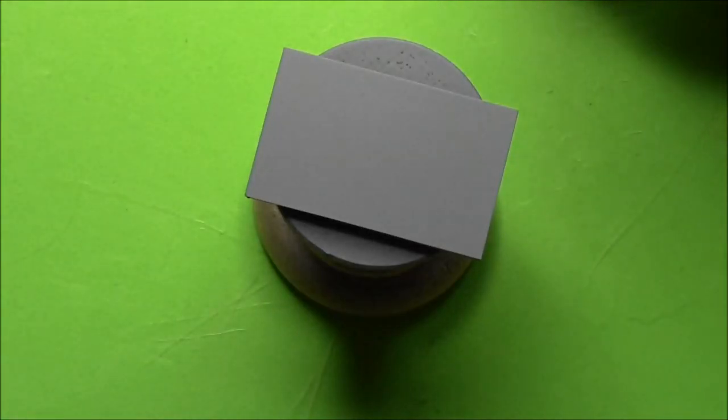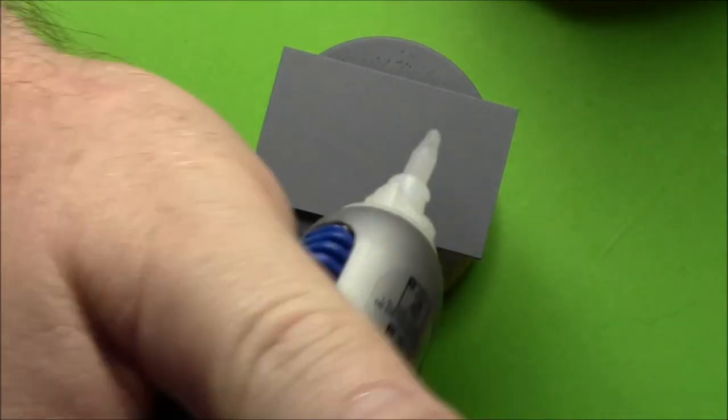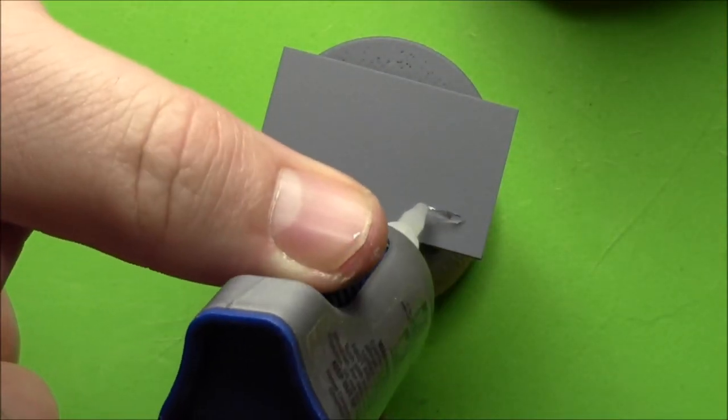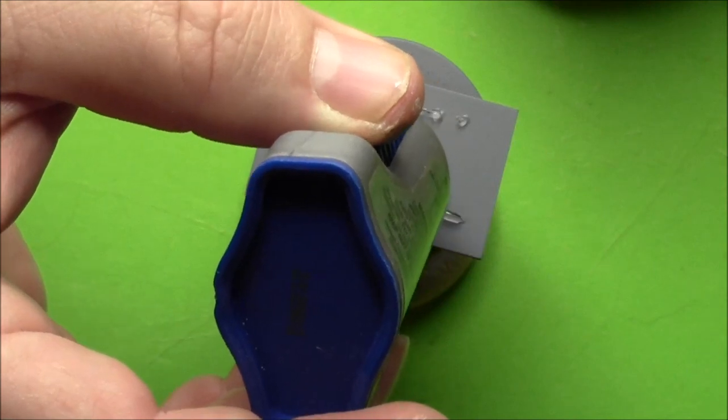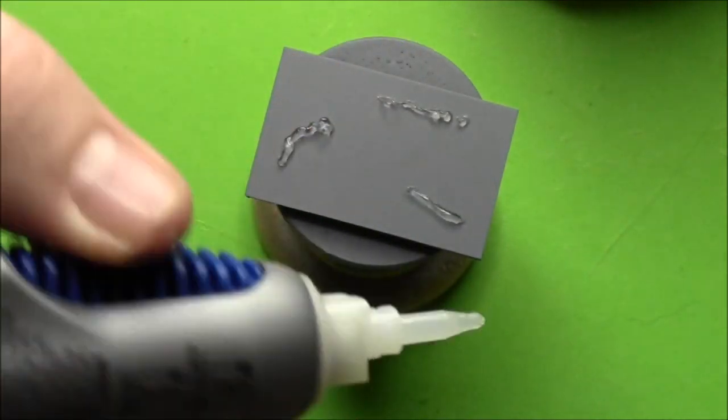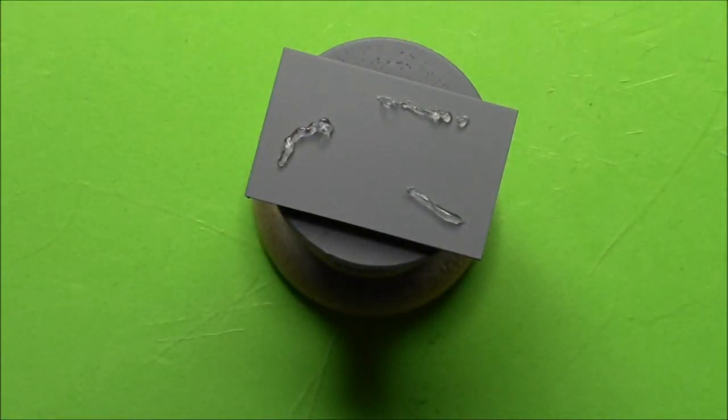This base is going to represent a frozen battlefield with rows of downtrodden wheat stubble. First we'll apply the superglue. This is superglue gel. Regular superglue will capillary up between the hairs and make a mess, so make sure you use the gel.